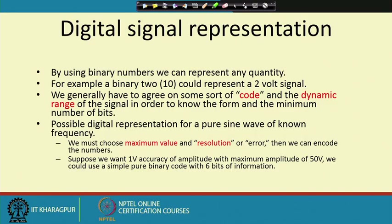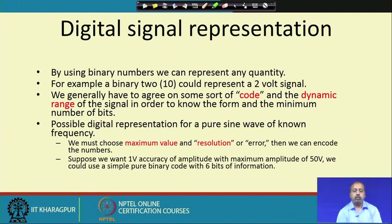For example, binary 2 is represented by 2 bits — 1 0 — which could represent a 2-volt signal, if binary 1 corresponds to a 1-volt signal. We generally have to agree on some sort of code. You can say −12 volt is 0 and +12 volt is 1, or somebody may say +12 volt is 0 and −12 volt is 1 — both are possible. Different systems use different representations.